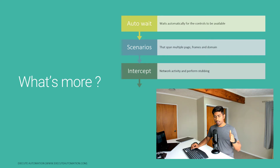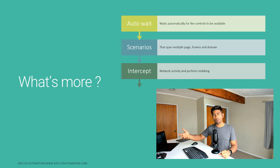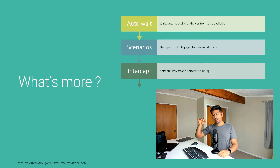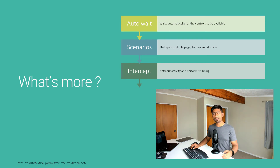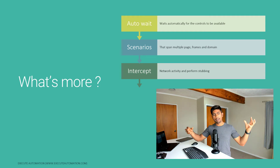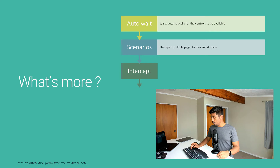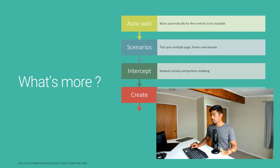Playwright can intercept network calls, XHR calls, and APIs. This is a great advantage because when a web page loads, it makes API calls. You can inject data, mock the responses, and then test the UI. This makes creating automated tests a lot easier, and you can set up the test environment very easily.